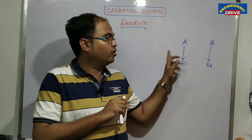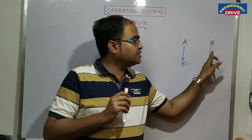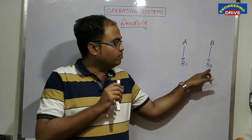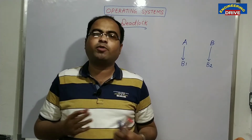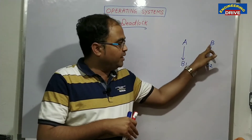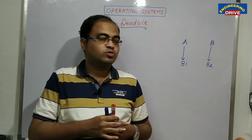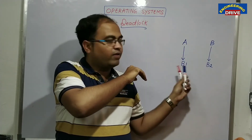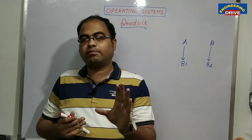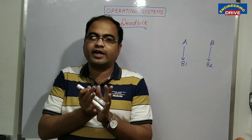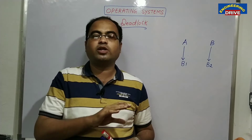Now what is deadlock? If A is not willing to give his book B1, and similarly B is also not willing to give his book B2 — but A wants B's book and B wants A's book — is it possible? It is not possible, because neither is willing to give their book. In this case, the execution or flow of activities will stop. We call this stoppage — this permanent interruption — as deadlock. Deadlock means the flow of normal activities and execution will not take place.